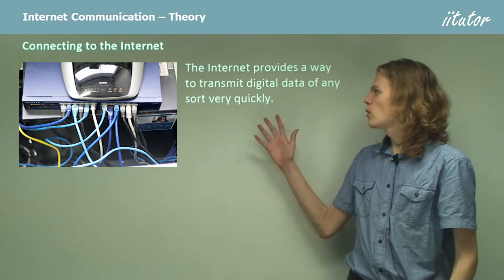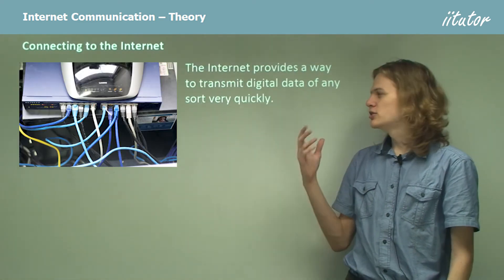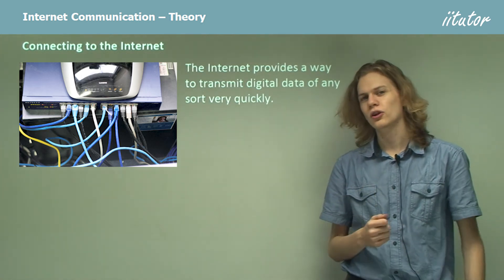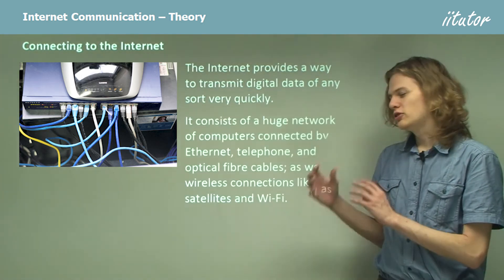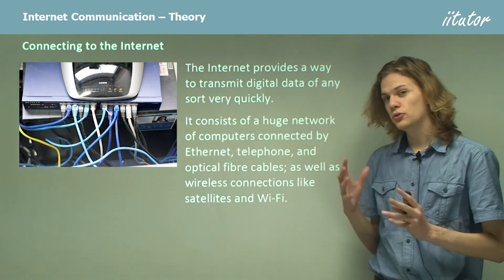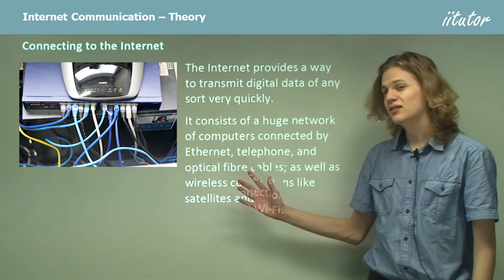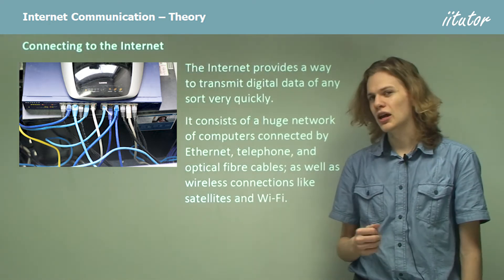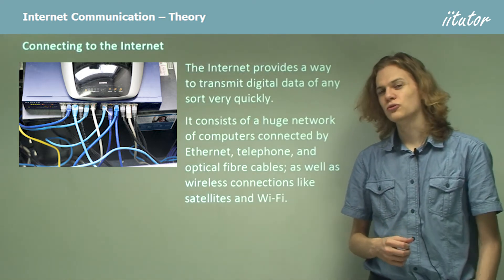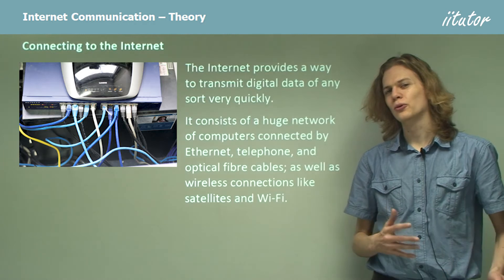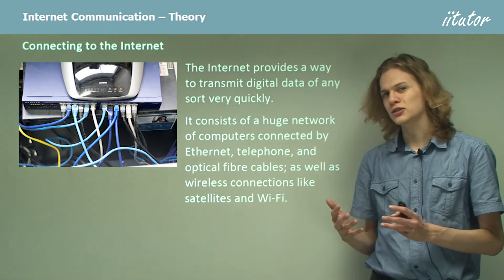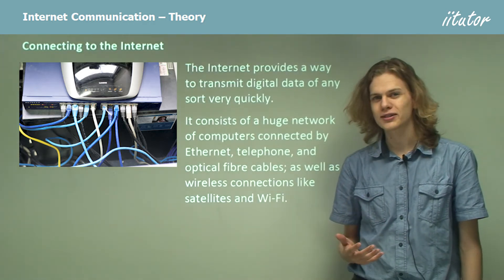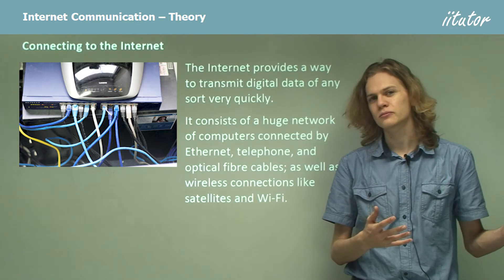The internet provides a way of transmitting digital data very quickly and all over the world using telephone communications. We have a huge network of computers connected by things like ethernet cables, telephone wires, and optical fibre cables, which of course we learned about when we were talking about total internal reflection. We can also use things like wireless communications to get things like satellite links.